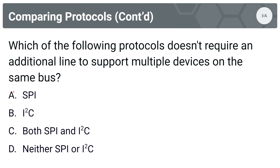The next question: which of the following protocols doesn't require an additional line to support multiple devices on the same bus? Options are A, SPI; B, I2C; C, both; or D, neither. The answer is I2C. In I2C, we only ever have two lines — each added peripheral or controller still shares the same SDA and SCL lines. With SPI, each additional peripheral requires an additional chip select line.